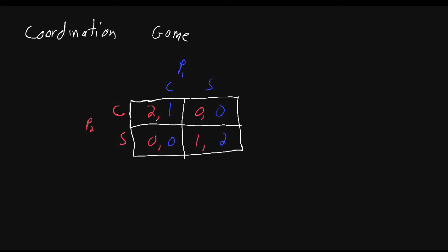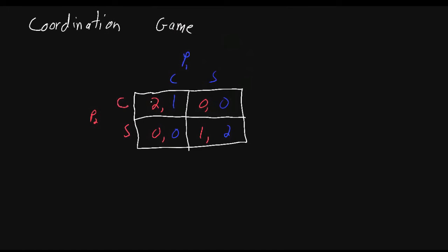Let's go through and check each box to see if they're a Nash equilibrium. Suppose both players choose to go to the concert — C, C. Is this a Nash equilibrium? If they both are going to the concert, does player two have an incentive to deviate? Holding player one's strategy at C, if player two deviated he would earn zero instead of two, so player two does not have an incentive to deviate. How about player one? Holding player two's strategy constant at C, if player one switched his action from C to S, he would earn zero instead of one, which is bad. So player one does not have an incentive to deviate, and we've found a Nash equilibrium.